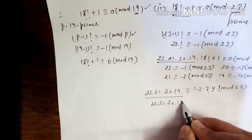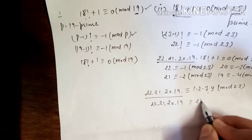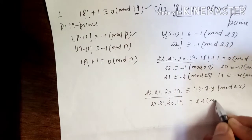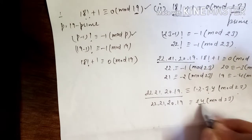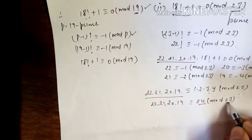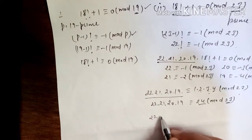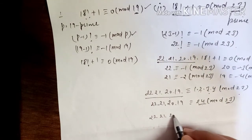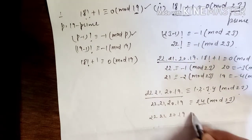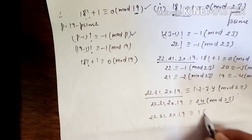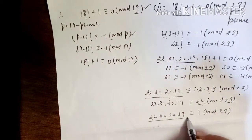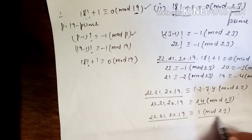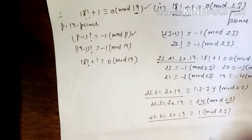So 22 × 21 × 20 × 19 ≡ 24 (mod 23). Now 24 divided by 23 gives remainder 1. So we can replace 24 with 1 mod 23. That means 22 × 21 × 20 × 19 ≡ 1 (mod 23).